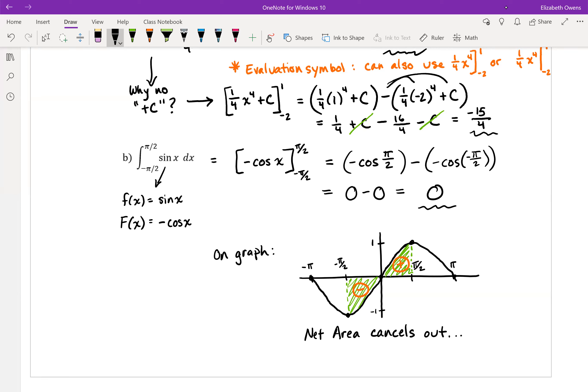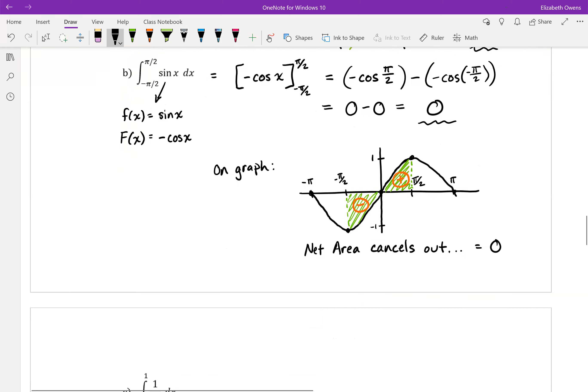So we can see that with FTC, or we can see that with net area. It agrees, which is kind of nice to see there. Now let's look at one more example.